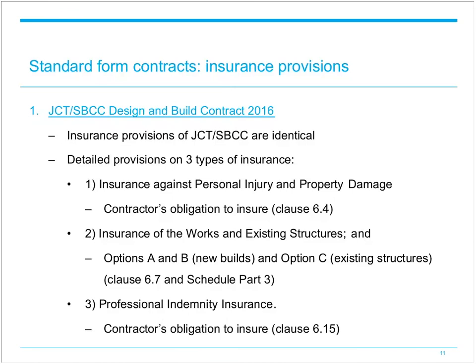The 2016 edition is more flexible as to who provides cover under Option C, as it can be difficult for an employer to arrange such insurance if, for example, they are only a tenant or owner of a domestic property. All-risks insurance covers any physical loss or damage to work executed and site materials. However, despite the name, such insurance rarely covers all risks — for example, JCT and SBCC contracts exclude wear and tear, property defects, and acts of terrorism.